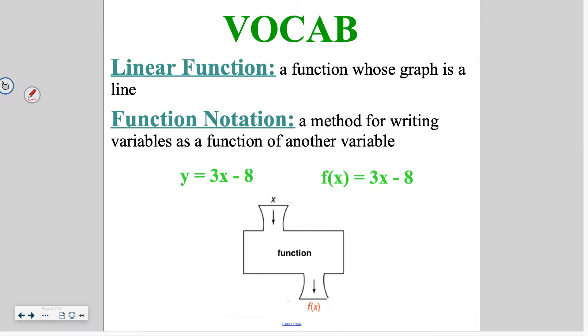So first off, a linear function is a graph whose function is a line. So if we go back to chapter 2, all of those different graphs that you were doing, all of those formed a line. So all of those equations are types of linear functions. One specific thing we do with functions is use a method for writing variables as a function of another variable, and we call that function notation.